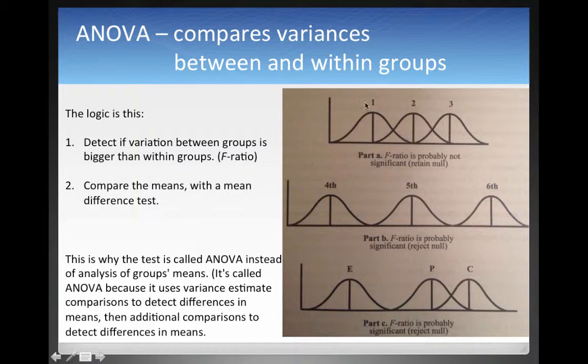So imagine these are three different groups. Each of them has a mean, and they have a distribution, a variance.